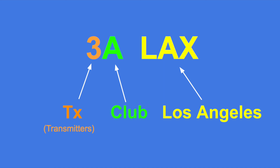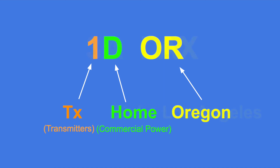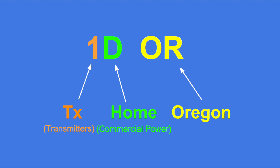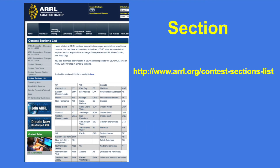Let's see another example. 1D OR means that this is a single transmitter from a home station using commercial power and it is from Oregon. The section refers to your location. The full list of available sections can be found on the ARRL website and I will put the link in the description of this video.